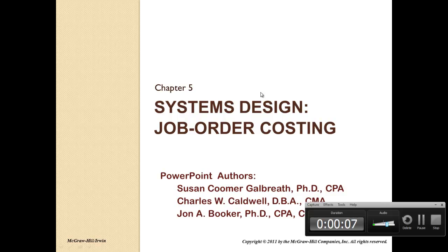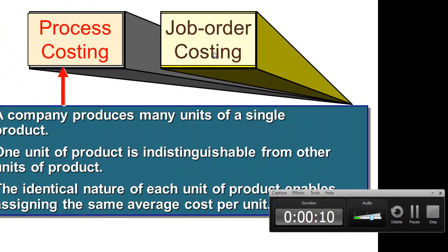This is an overview of Chapter 5, System Designs: Job Order Costing. Managers need to assign costs to products to facilitate external reporting, internal reporting, and decision making. This chapter illustrates the absorption costing approach, also known as job order costing.